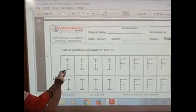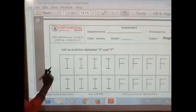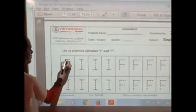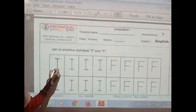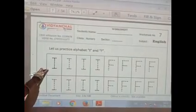This is dotted I. Now we are going to trace it. Sleeping line, standing line, sleeping line. See, this is I.